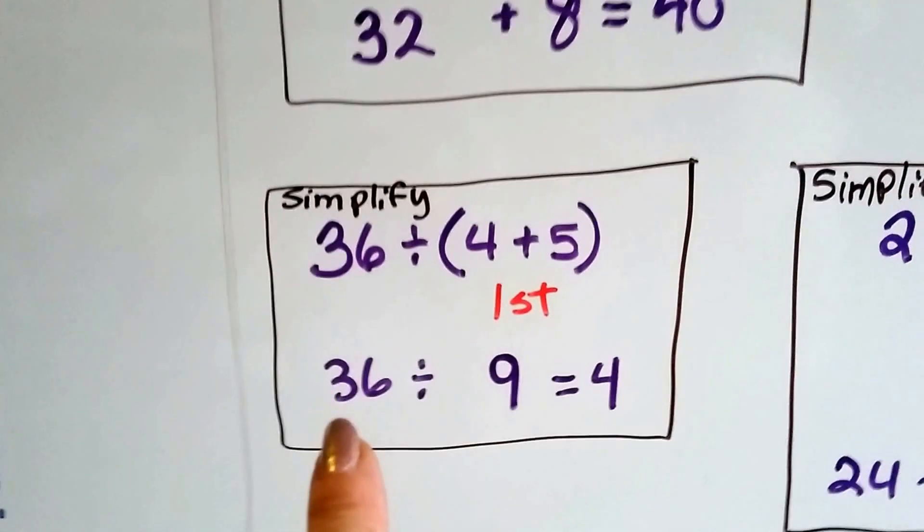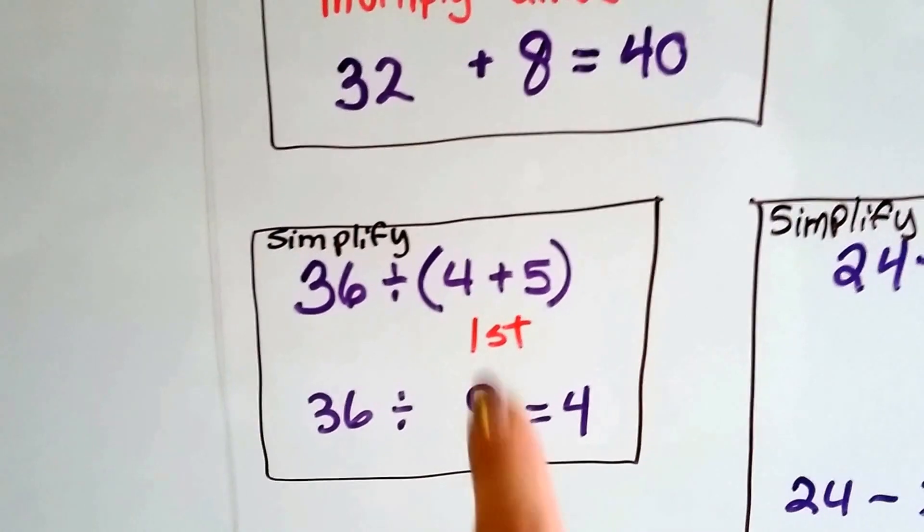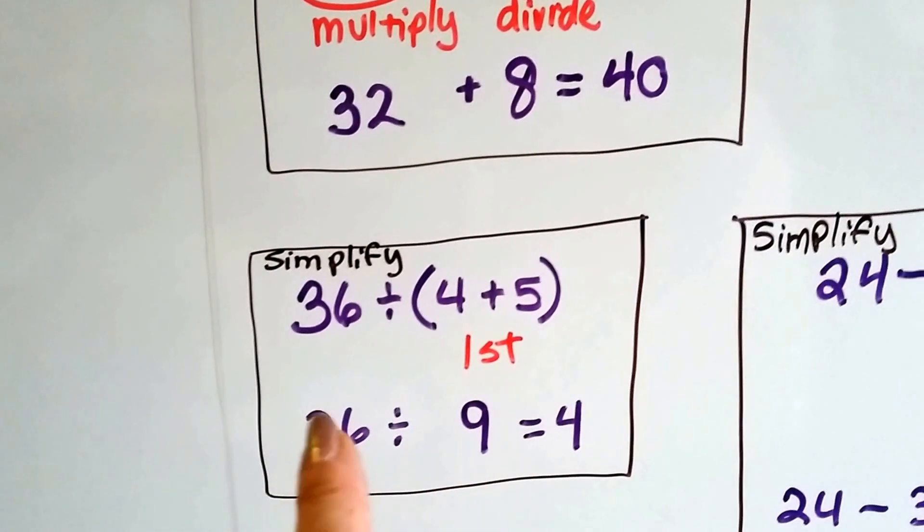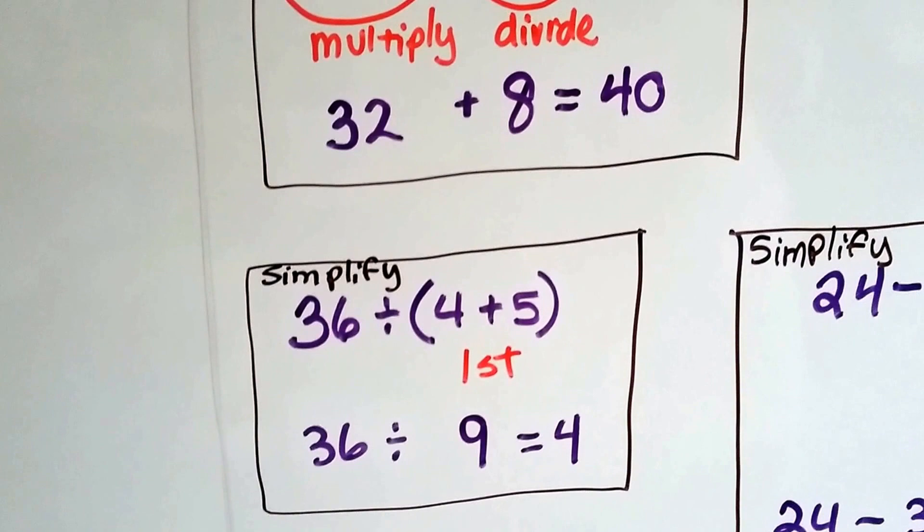If we've got this one, we see the parentheses, so we know to do 4 plus 5 is 9. We do that first. Then we do 36 divided by 9, which is 4.